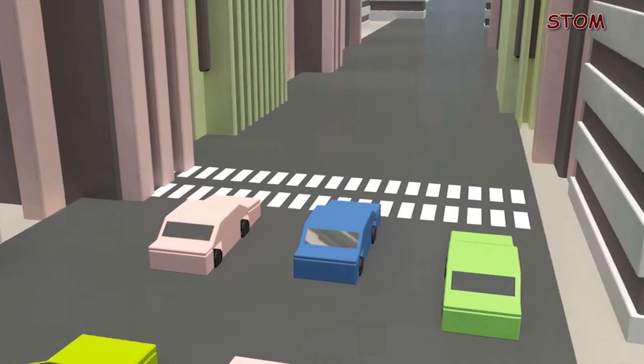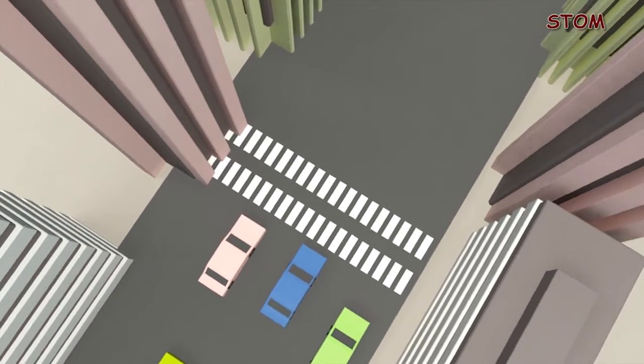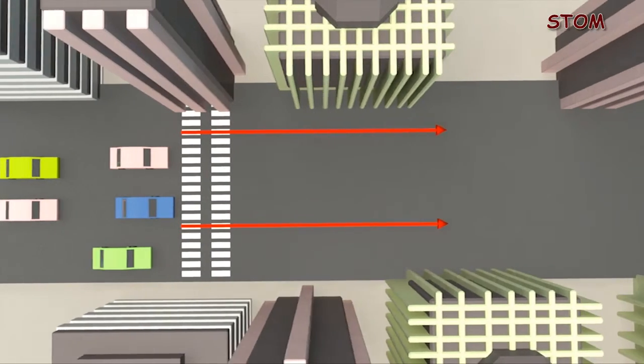For example, the lines of zebra crossing are parallel. If we draw two red lines on any two lines of the zebra crossing and extend the lines as shown in this video, we will observe that the lines will never meet.